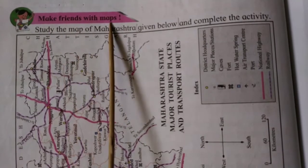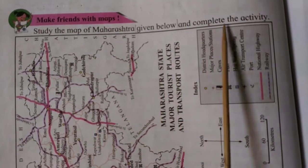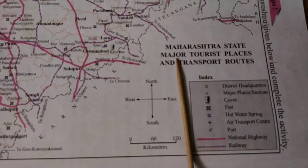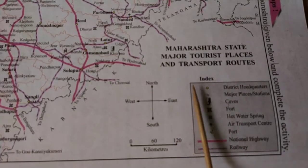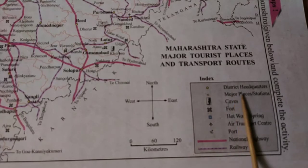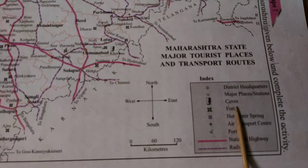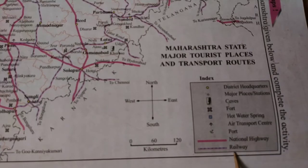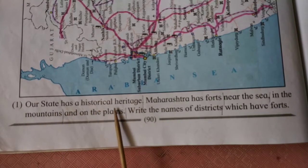Make friends with maps. Study the map of Maharashtra given below and complete the activity. Maharashtra State: Major Tourist Places and Transport Routes. Index: District Headquarters, Major Places, Stations, Caves, Fort, Hot Water Spring, Air Transport Centre, National Highway, Railway.